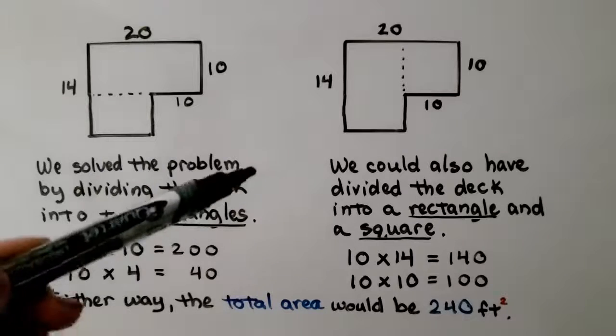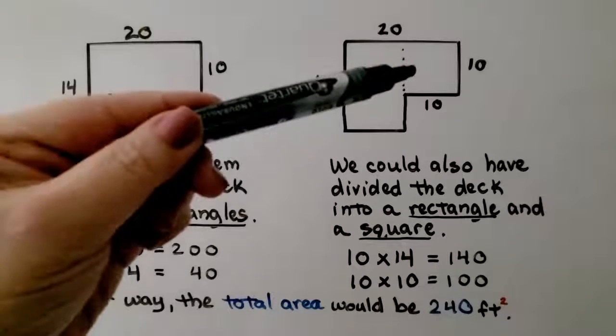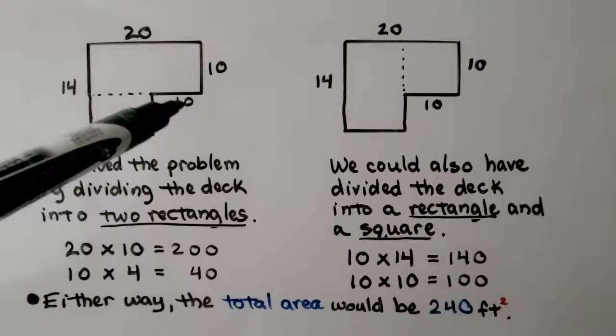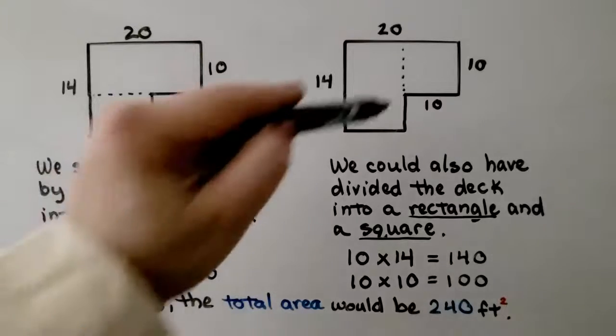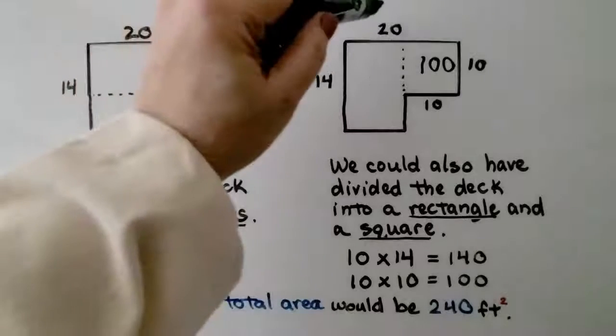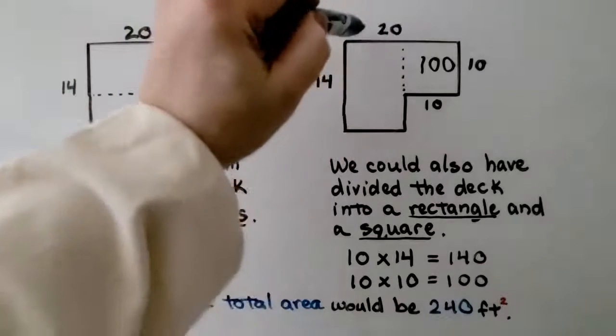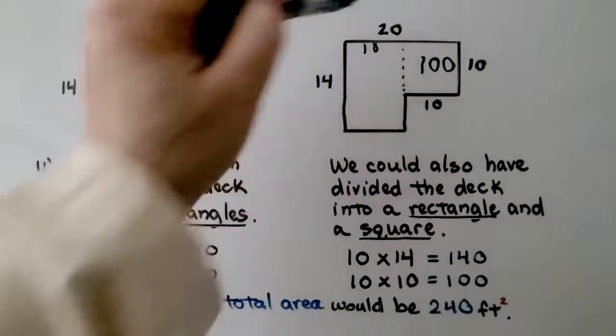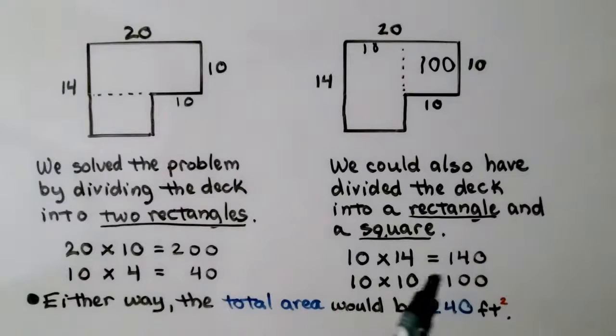We also could have divided the deck into a rectangle and a square. We see that this is 10 and that's 10. That means this area right here would be 100. And that is 20. So, that means this little portion right here would be 10.